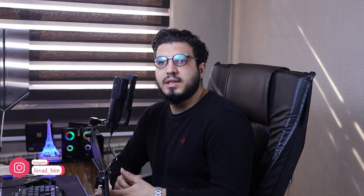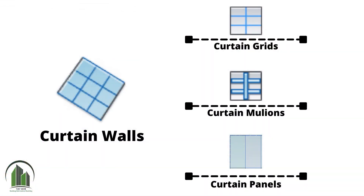Javad here, and let's learn everything you need about curtain walls. Curtain walls are walls but in a different way — they give us more potential to create amazing things for our facade, interior partitions, and more. First, let's talk about the different elements in a curtain wall. In a curtain wall we have three different elements: panels, grids, and mullions.